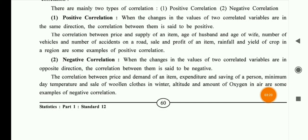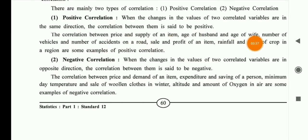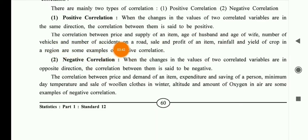The correlation between price and supply of an item, and the age of a husband and age of a wife — these are examples of positive correlation. Similarly, the number of vehicles and the number of accidents on the road — if vehicles increase, accidents also increase. Sales and profit also move in the same direction, making these positive correlation examples.